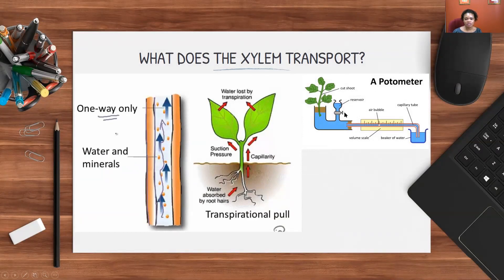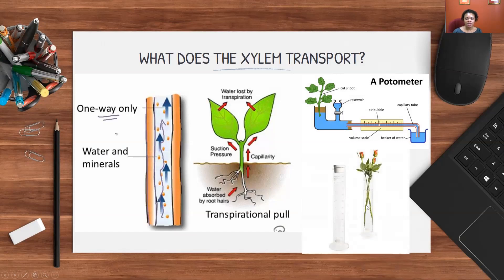What does the xylem transport? The xylem transports water and minerals, and this is one way, so it goes in one direction only. As mentioned before, you have transpiration pull, water is being absorbed by the root hairs, capillarity, tension, cohesion, all of that is happening to pull the water up, and the water is lost by the leaves. The more water is lost by the leaves, the more water is pulled up because it's creating a demand and supply situation. To measure the rate of transpiration, we usually use a potometer, which is what one looks like. Sometimes we use a measuring cylinder and we measure the volume of water. In this case, we look at the movement of the air bubble.